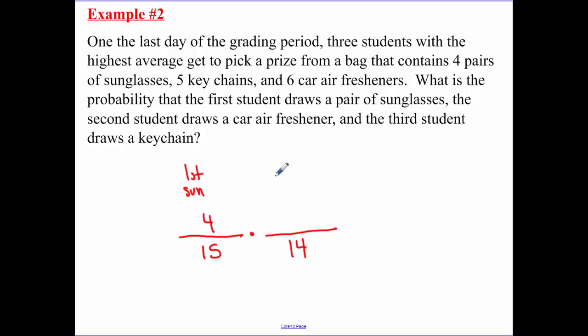Our second draws an air freshener, so our second was an air freshener - there are six air fresheners. Now the number of things is again decreased by one. So then our third student has a key chain, and there's five key chains. When we go through and multiply that, we get four out of 91.